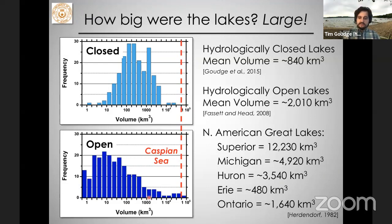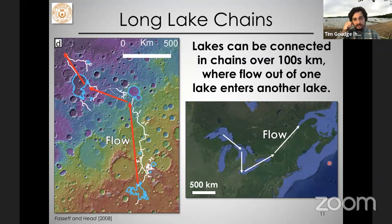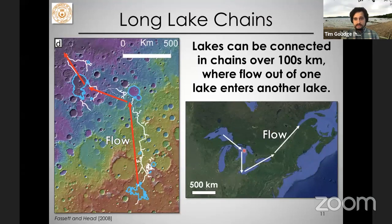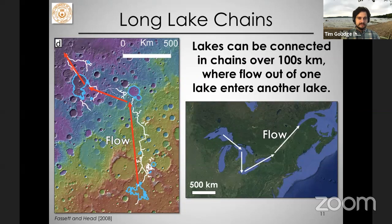Another thing we see with these lakes is that they can be connected into long chains. Drawing an analogy to the North American Great Lakes, where water flows from Lake Superior through an interconnected system and out the St. Lawrence Seaway into the Atlantic Ocean — we see the same thing for lakes on Mars, where the outflow of one lake enters as the inflow for a downstream lake, connected over hundreds of kilometers.